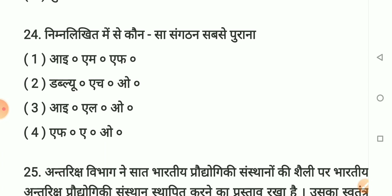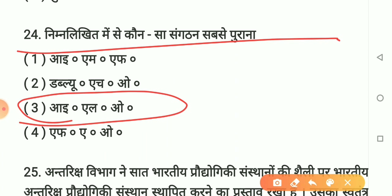Question number 24: Kaun sa sabse purana antarrashtriya sangathan hai? Option 1 - IMF. Option 2 - WHO. Option 3 - ILO. Option 4 - FAO. Sahi answer hai option 3: ILO. ILO sabse purana antarrashtriya sangathan hai. Yaad rakhiye.